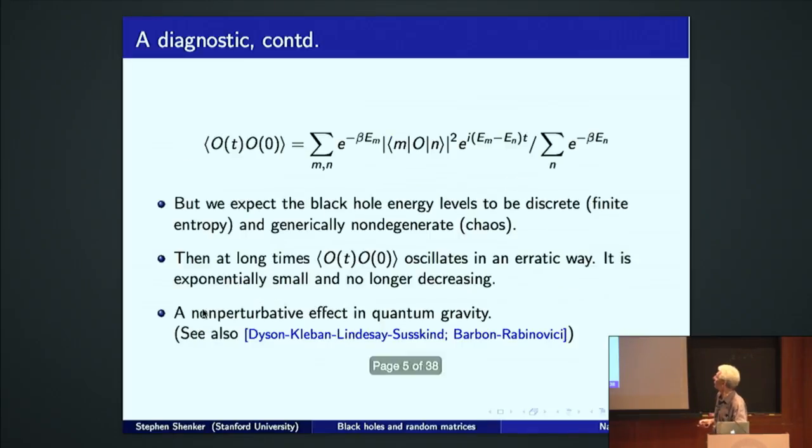These are just the quasi-normal modes that cause the black hole to relax after an initial perturbation. But at long times, things are different. We expect that this black hole, this finite entropy black hole to have discrete energy levels because of finite entropy. And we expect these energy levels to be generically non-degenerate, essentially because the black hole is a chaotic system.